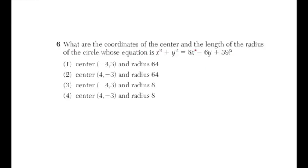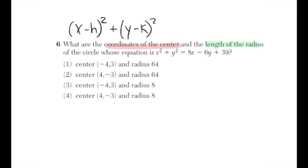Question number six: find the center and radius of the circle x² + y² = 8x − 6y + 39. We'll need the standard form of a circle, (x − h)² + (y − k)² = r², where (h, k) is the center and r is the radius. First, move all variables to the left: x² + y² − 8x + 6y = 39.